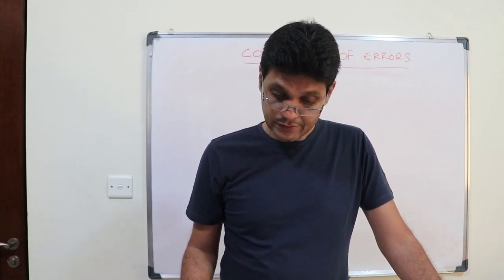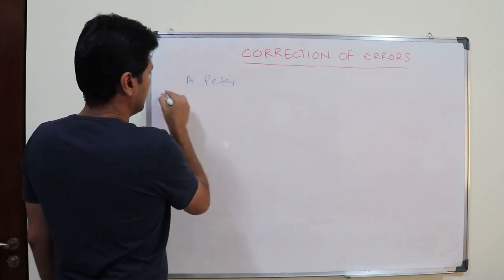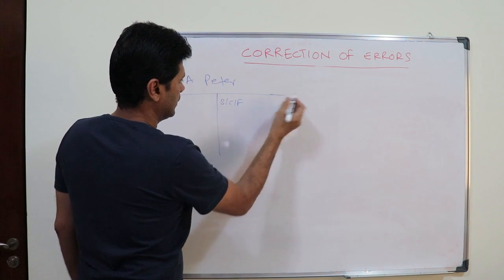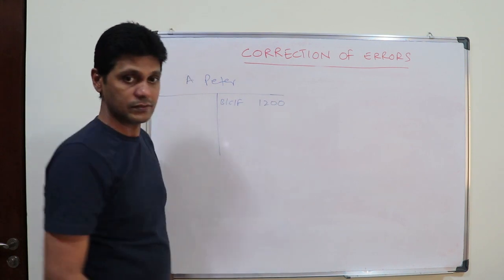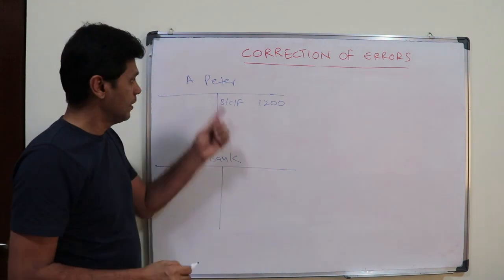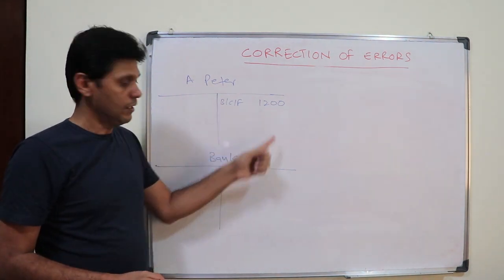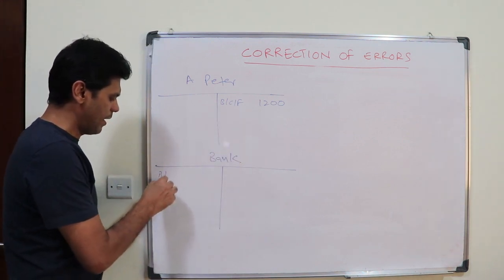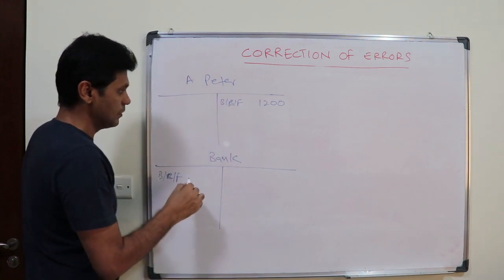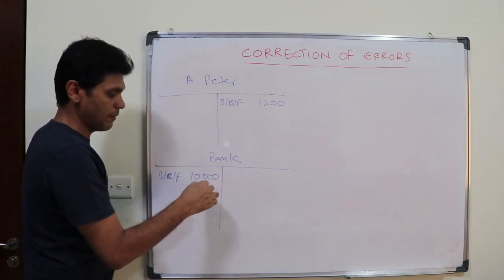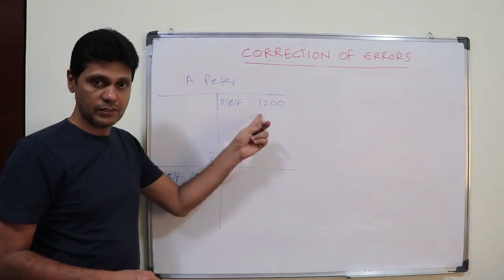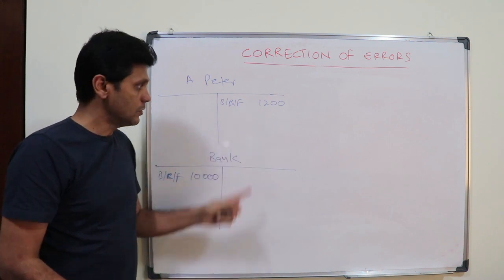So how do you rectify this error? Let's look at A Peter's account. There is a balance carried forward — let's say one thousand two hundred dollars. This amount was paid to A Peter. The company has a bank balance of ten thousand and the supplier balance is one thousand two hundred, so you need to settle it. You paid one thousand two hundred.